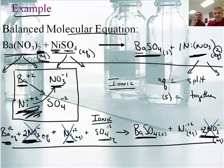Actually, let me change the colors. It might make it easier. So guys, it's a spectator ion if it is an ion on both sides of the arrow. So we have 2 nitrates on the left and 2 nitrates on the right, so they go away. We have a nickel on the left, we have a nickel on the right, so they go away.